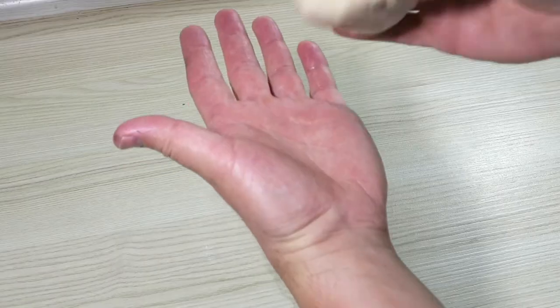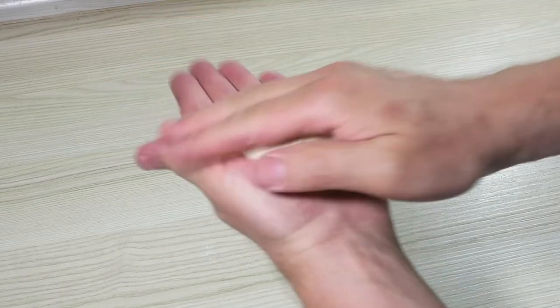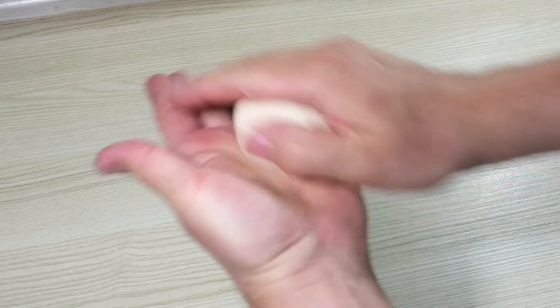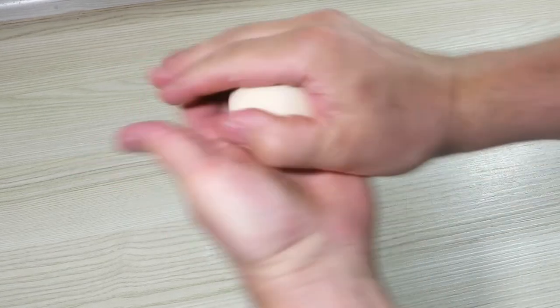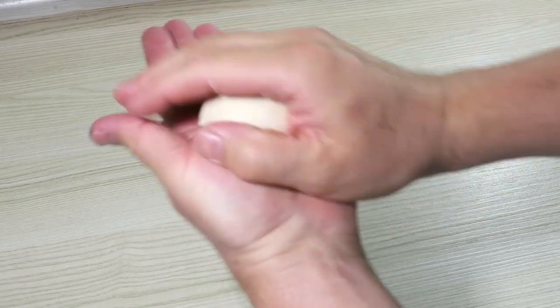Round forming also works without a table, then one hand takes over the role of the table. You can try it this way, maybe in the beginning round forming in this manner is easier for you.